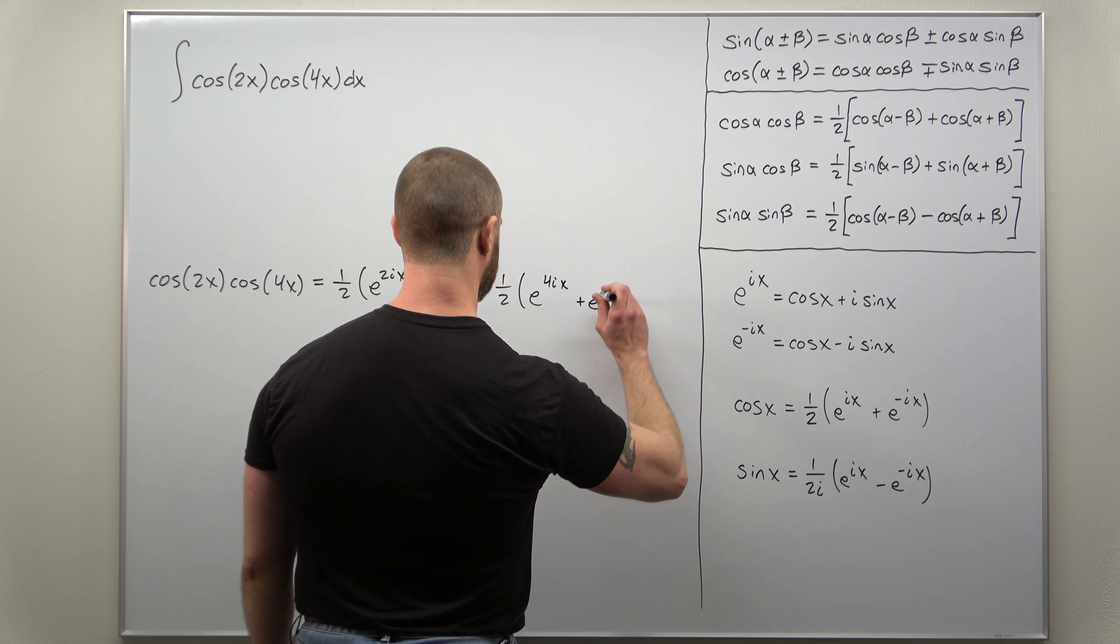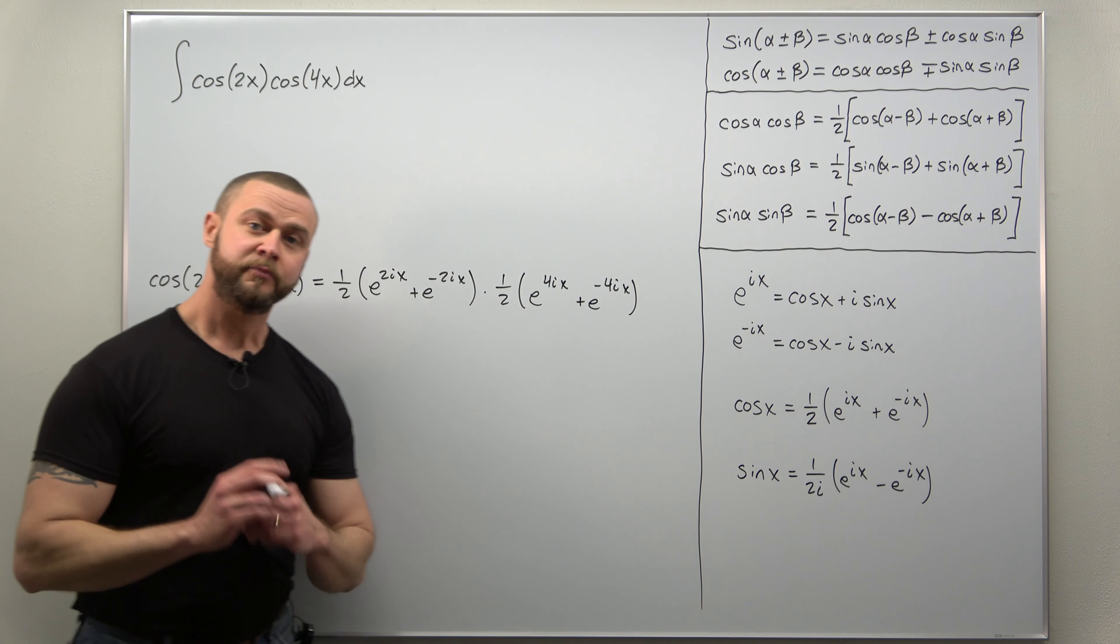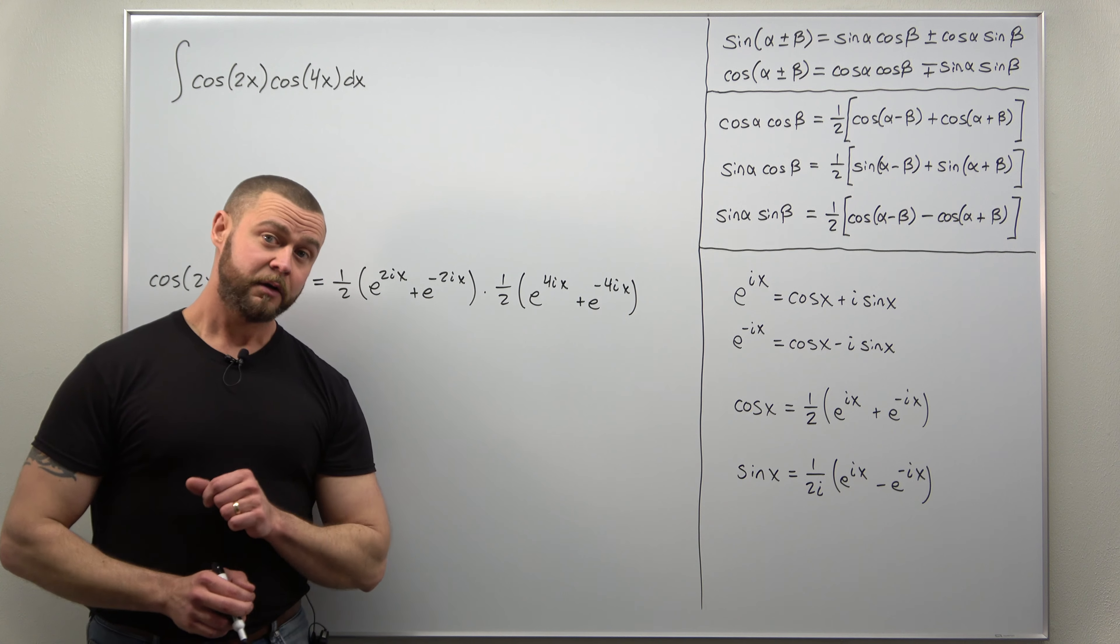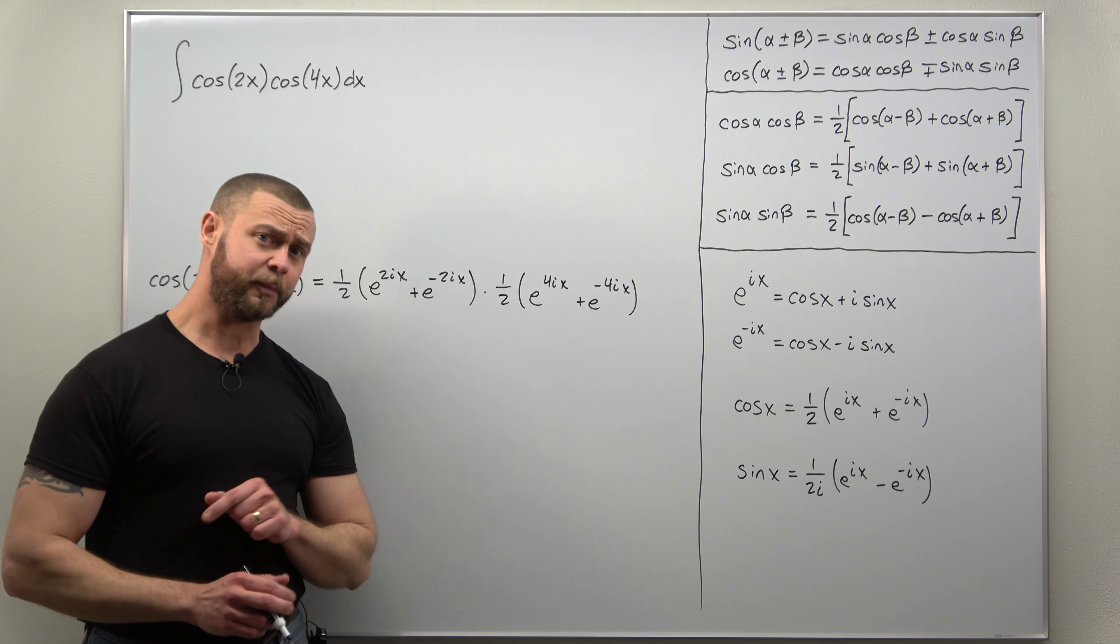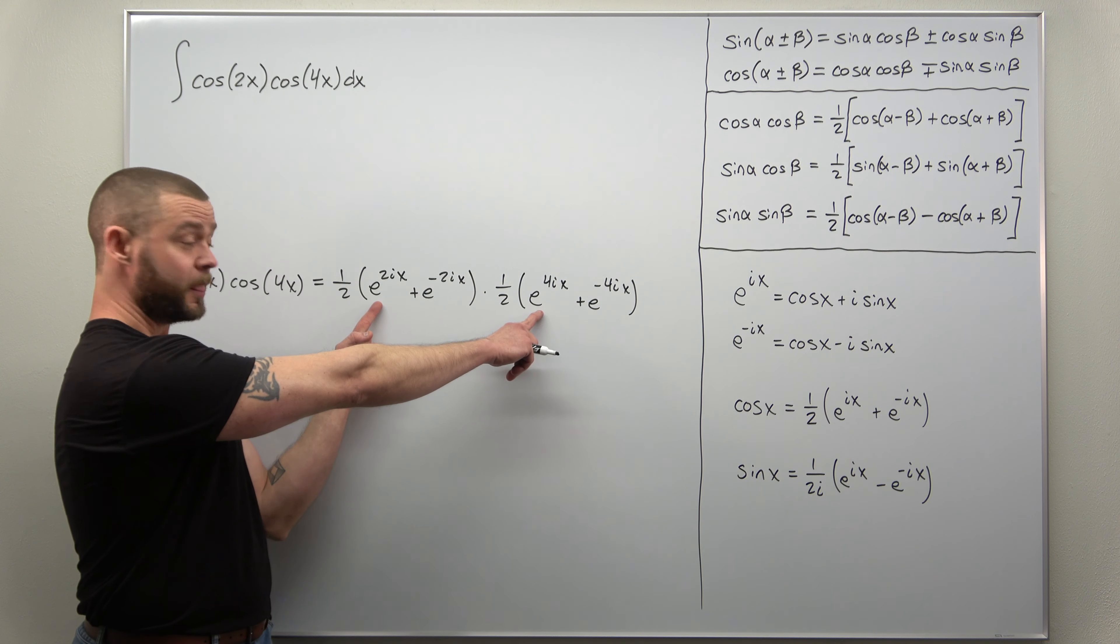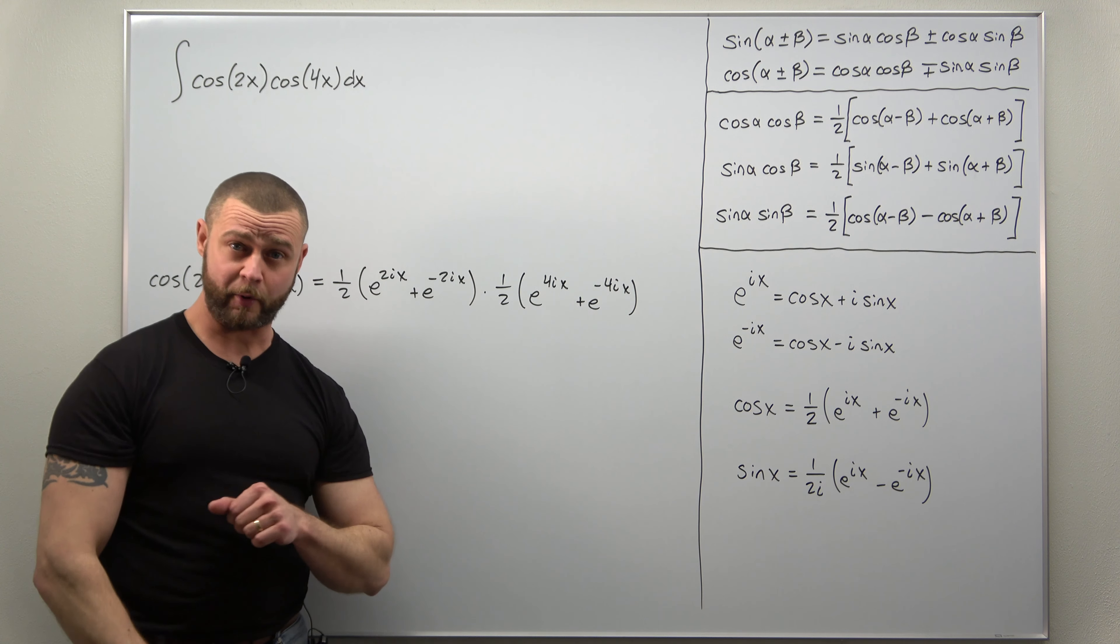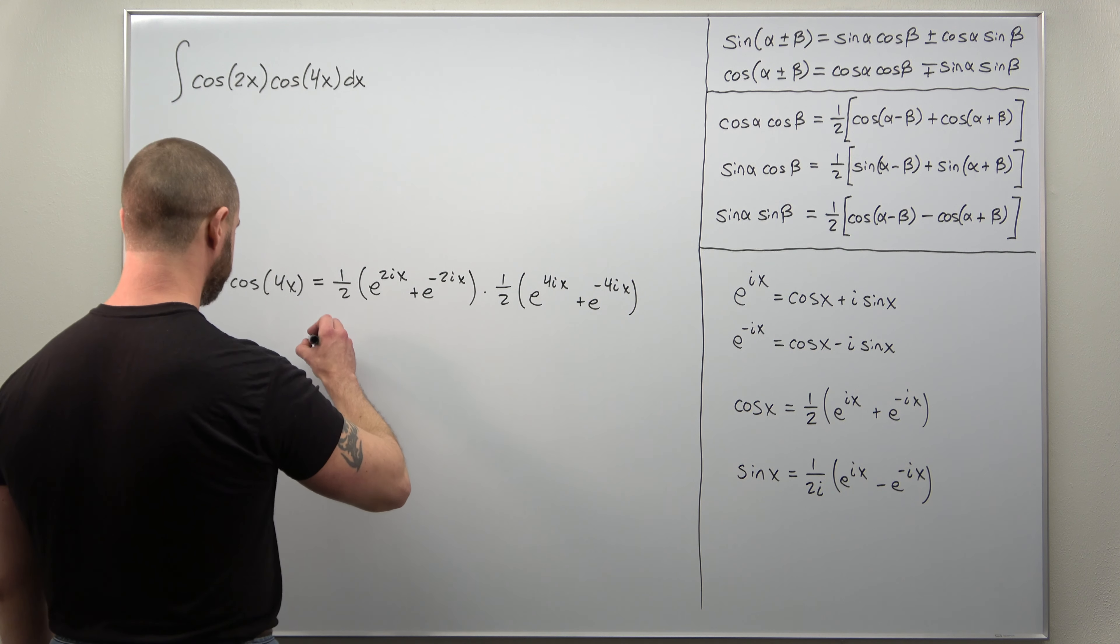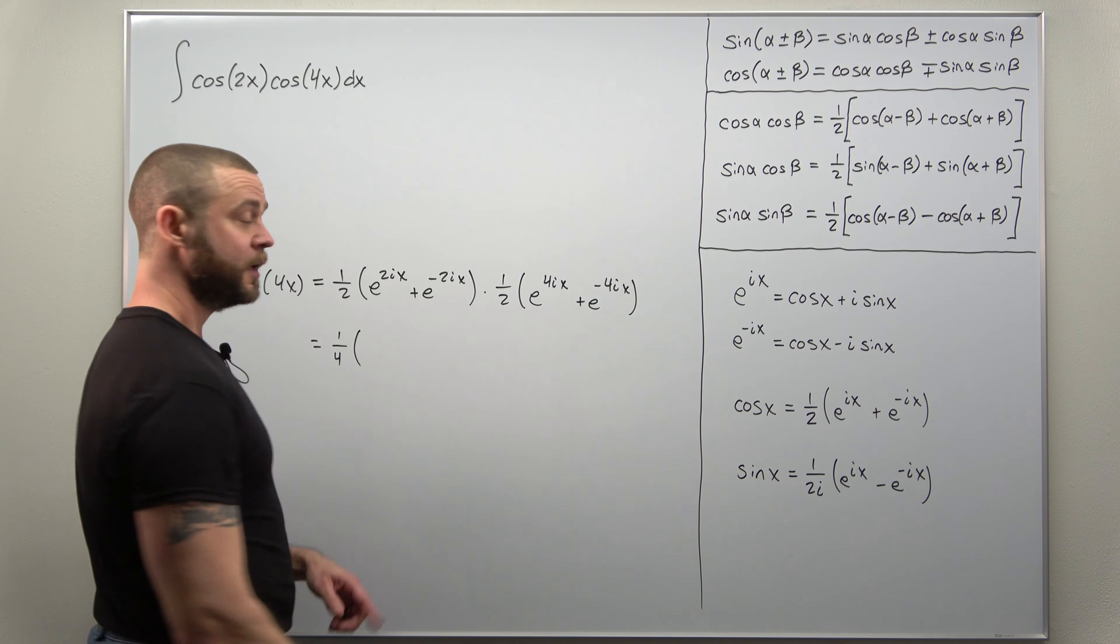From here it's just basic algebra, multiplying out those two sets of parentheses. Make sure you're comfortable when you multiply exponentials of the same base you can add their exponents. Let's pull the factors of a half out front. We'll write them both as one-fourth.